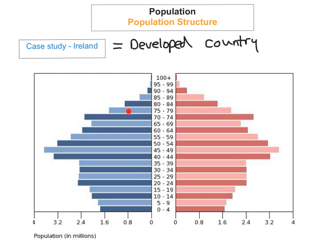Looking from about 65 years upwards, we've got a very wide peak. A wide peak tells me that death rates are low. Death rates in Ireland are low because of good technology and greatly improved healthcare, better healthcare facilities, improved education about diets and nutrition, and greatly improved access to clean water and sanitation. Overall, Ireland has a good standard of living, which gives a wide peak at the top, meaning the death rate is low.